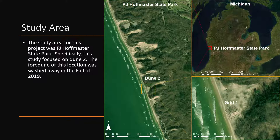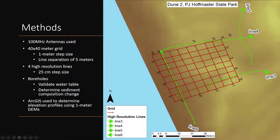Our study area was Dune 2, one of several dune systems at Hoffmaster State Park, which is located on the west coast of Michigan. We used a variety of methods to collect GPR data at our study site, as seen on the map to the right.